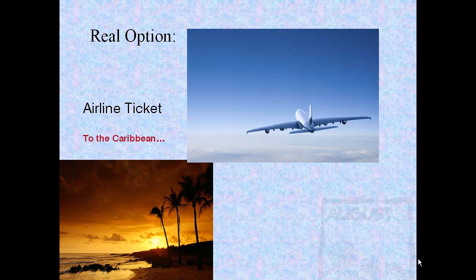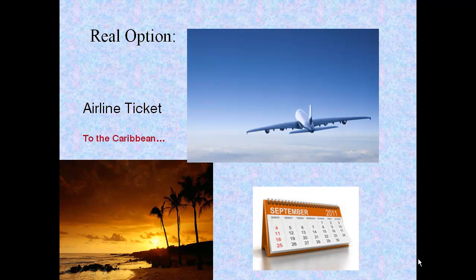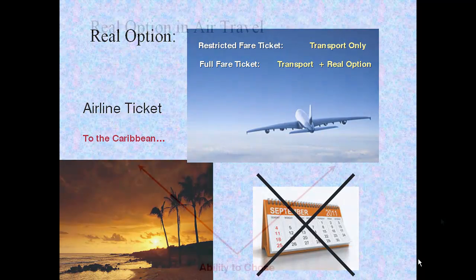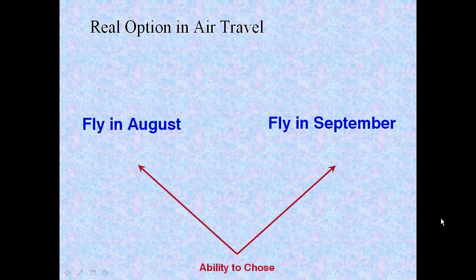A real option most everyone is familiar with can be seen in an airline ticket. Let's say you've purchased a ticket on a flight to the Caribbean departing in August, but for some reason you'd prefer to travel in September. Can you? Depends on the type of ticket you bought. No go with a restricted fare ticket, not without heavy penalties, but the more expensive full fare ticket will allow you to change. Essentially, by buying the restricted ticket, you own transportation, nothing more. But by buying the full fare ticket, you own both transportation and a real option that allows you to change your travel dates or cancel travel altogether.